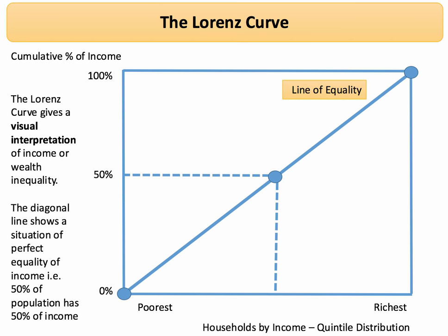Now, the line of equality: if there was no inequality, the Lorenz curve would be a straight diagonal line at a 45-degree angle, starting at the origin and going to the top right. In other words, every household would have essentially the same income — 50% of households would have 50% of the income. We know of course that's not the case.